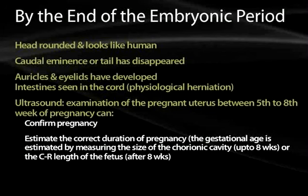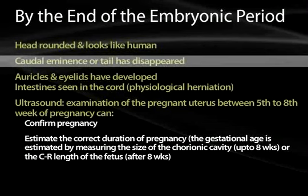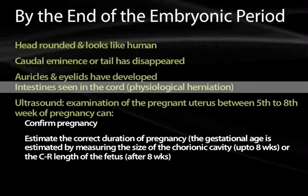By the end of the embryonic period, there should be a rounded head that starts to look human, a caudal eminence or tail that has disappeared, and ears and eyelids will have started to develop. All major intestinal structures will be forming. At the end of this period there is a physiologic herniation — the embryo's internal organs are growing so quickly they don't fit inside the abdominal cavity and naturally herniate out into the umbilical cord.